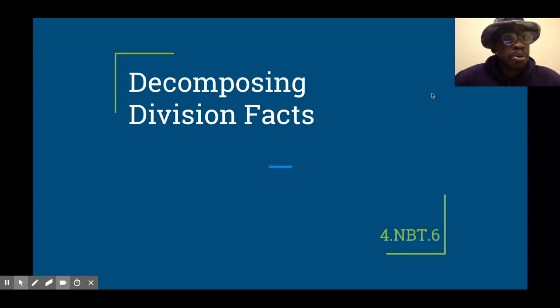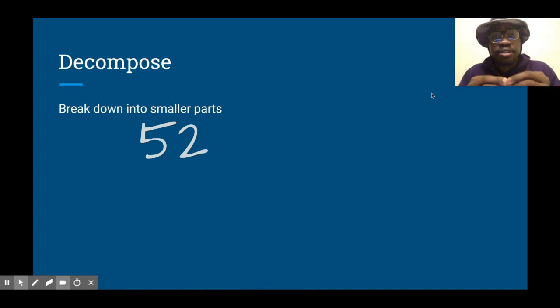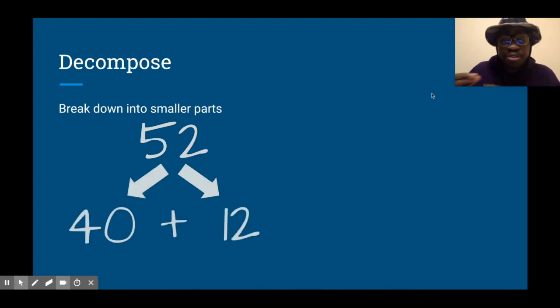Alright, so we're going to decompose to help us solve division facts. Now, decompose means to break down into smaller parts. For example, with the number 52, I could decompose it into 30 and 22, or 50 and 2. In this example, I'm going to use 40 and 12—they still make 52, but they're smaller parts. I chose those numbers for a reason you're going to see in just a second.